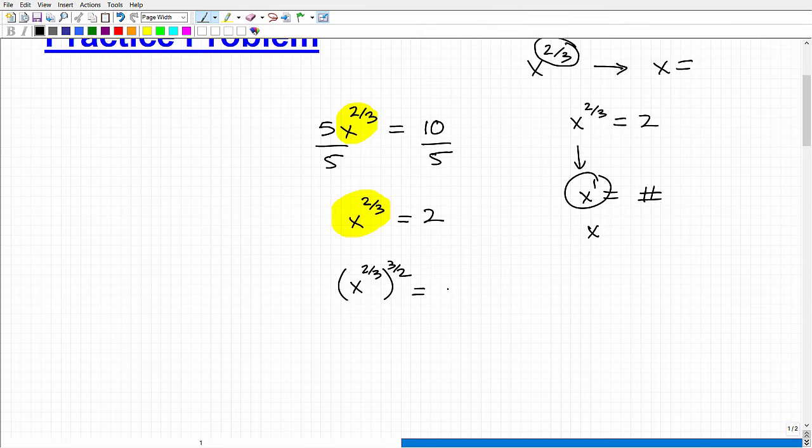However, in algebra, as you well know, whatever I do to one side, I'm going to have to do to the other side of the equation. So I'm going to have to take 2 and also raise it to the 3/2 power. So let's go ahead and do that now. x to the 2/3 raised or taken to the 3/2 power is going to be x to the first or just x. So now I have that equaling 2 to the 3/2 power.